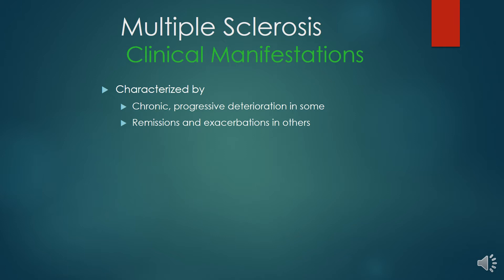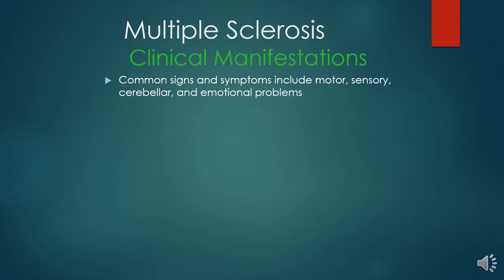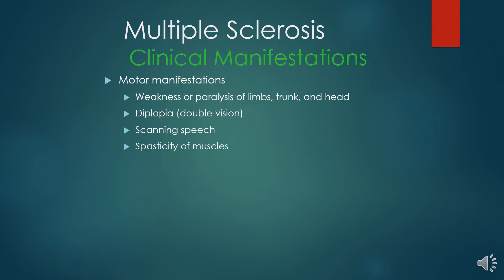Multiple Sclerosis is characterized by chronic progressive deterioration and remission and exacerbation in others. Common signs and symptoms include motor, sensory, cerebellar and emotional problems. Motor manifestations include weakness, diplopia, scanning speech, and spasticity of muscles.